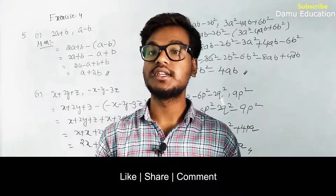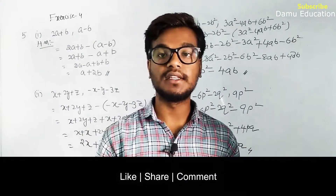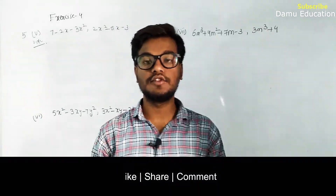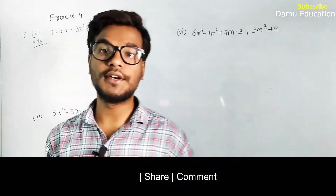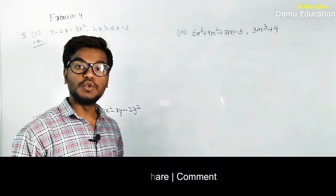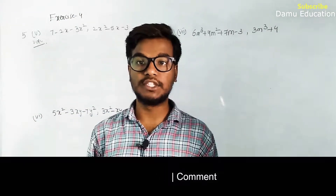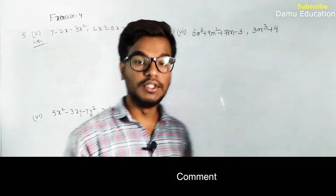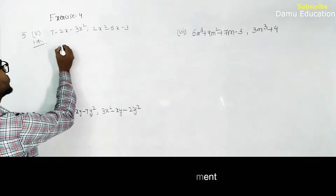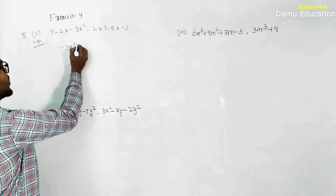We have solved all the expressions using the horizontal method. Now we are going to continue with the fifth question using the vertical method. In the vertical method, you first write the given expression in descending order.